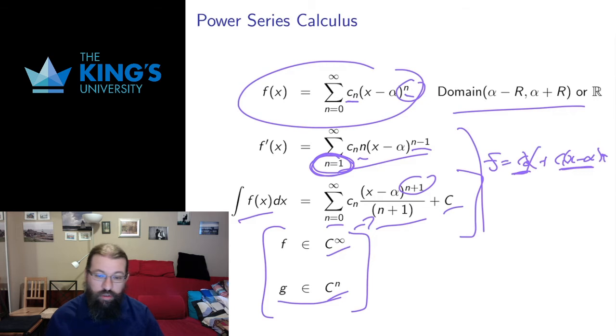So a function g is in class Cⁿ if I can differentiate it n times and the result is continuous. And a function f is in class C∞ if I can differentiate it any number of times. And power series are always in class C∞. All this takes place in the domain, so all this will remain true with the same radius of convergence all the way through.